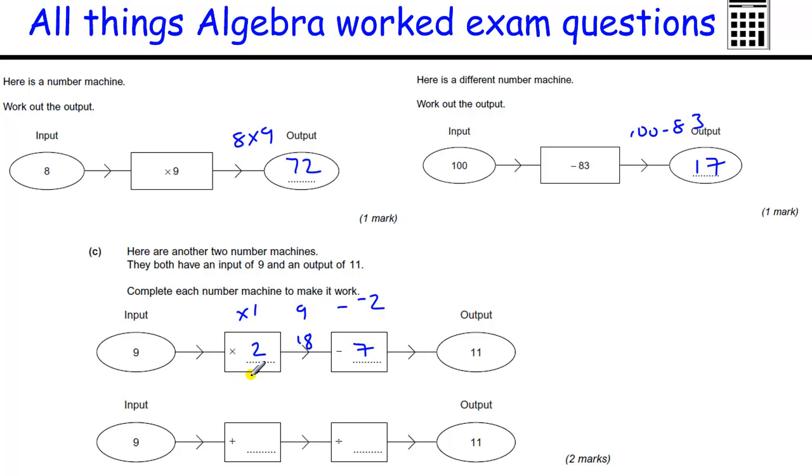I could use bigger numbers, so I could times by 3 to get 27, then take away 16 to get to 11. Or even times by 10, get 90, and then take away 79, and take it down to 11. So any combination that works is fine, but 2 and 7 are the easiest two.